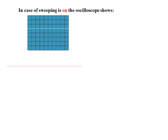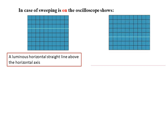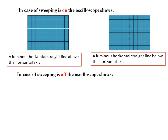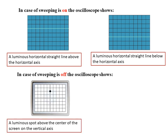In the case where sweeping is on, the oscilloscope shows a luminous straight line above or below the horizontal axis, depending on the connection of the oscilloscope. In the case where sweeping is off, the oscilloscope shows a luminous spot above the center of the screen on the vertical axis.